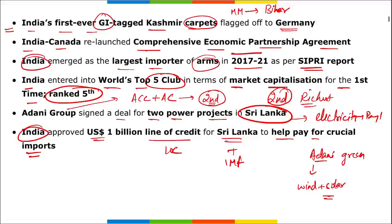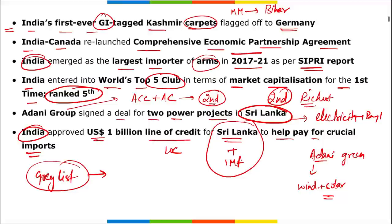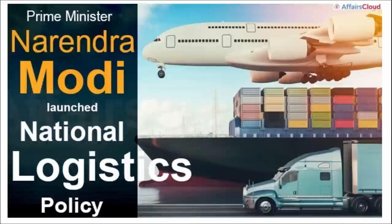India has now stated it won't be providing more monetary help to Sri Lanka as talks with the IMF are coming into play. Remember: if a country is put on the FATF grey list, it won't receive monetary help from the IMF, Asian Development Bank, New Development Bank, or any financial organization. The grey list flags a country for terror financing. Recently, the UAE was put on FATF's grey list.